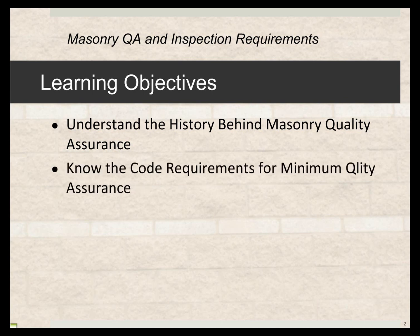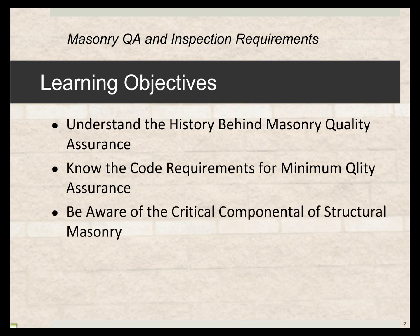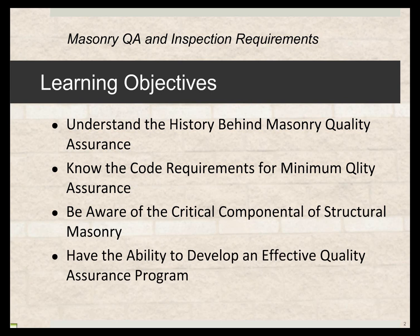We also need to know the code requirements for minimum quality assurance. The code requires a certain threshold or level, and we can always go above and beyond that. In certain cases, we are encouraged to, because the code represents the minimum quality assurance. We have to be comfortable with what we specify as our quality assurance program. We also want to be aware of what I call the critical components of structural masonry — there are about two or three that are more important than the others. Everything is important, but these are absolutely what I call critical components of structural masonry, and we'll review how to make sure they're implemented properly.